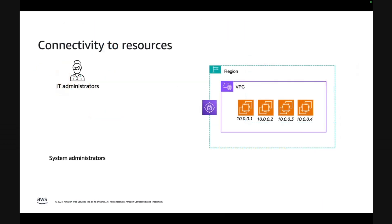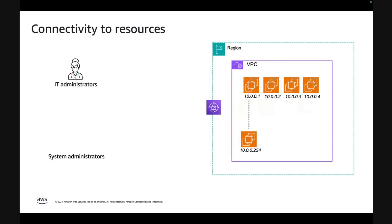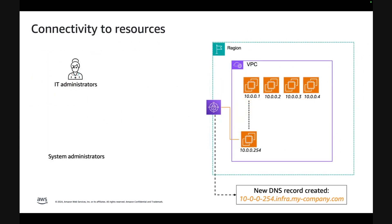Let's look at this in action. For example, if there is a new resource that is added, Verified Access will immediately connect to the new resource and generates a public DNS record in the delegated zone. IT administrators don't have to take any new action to onboard this resource or enable connectivity to it. At the same time, your end users can simply access the new resource using the public DNS record.